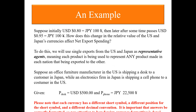Here's an example. Initially, the exchange rate says 100 Japanese yen is worth 80 U.S. cents, or $0.80. Later, a few months pass, and 100 Japanese yen is now worth 95 U.S. cents. The question is: how would this change in the relative value of the two currencies impact the net export spending of both nations?